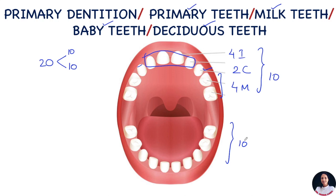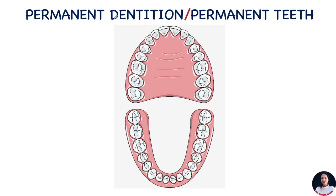Please note there are no premolars in the primary dentition. These primary teeth, or baby teeth, start coming in the mouth at around 6 months of age — teeth coming into the mouth is called eruption of teeth. All the baby teeth should fall out by the age of 12, and the falling of baby teeth is called exfoliation. Side by side, adult teeth or permanent teeth, also known as permanent dentition, start erupting.